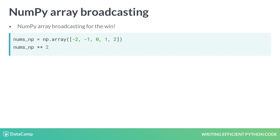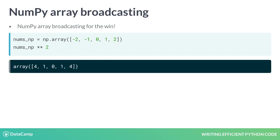NumPy arrays vectorize operations so that they are performed on all elements of an object at once. This allows us to efficiently perform calculations over entire arrays. Notice that by squaring the array nums_np, all elements are squared at once.